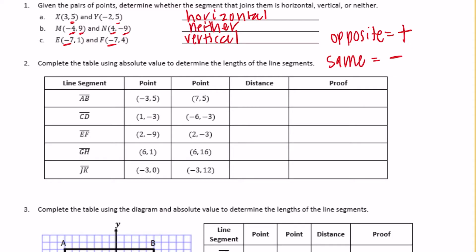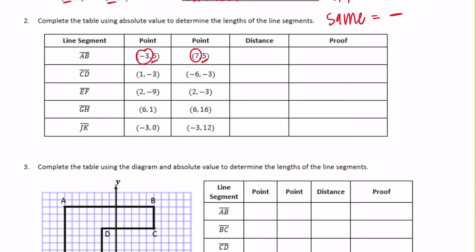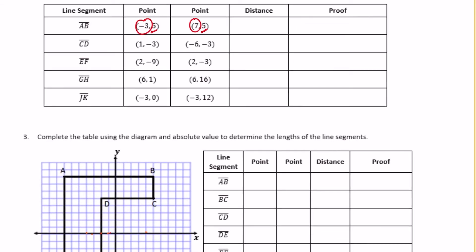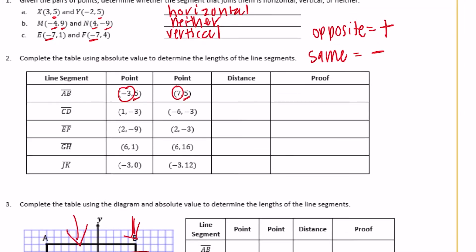So for negative 3, 5 and 7, 5 — the differing coordinates are negative 3 and 7. Negative 3 and 7 are on opposite sides of 0, so we add. The absolute value of negative 3 plus the absolute value of 7 equals 10. So the distance is 10.